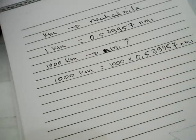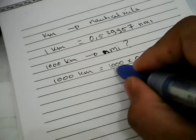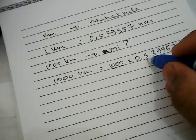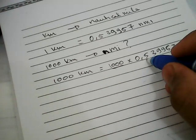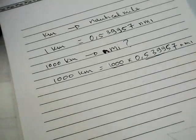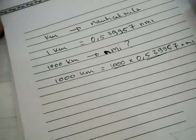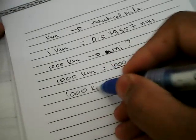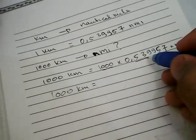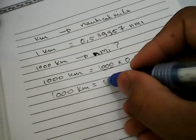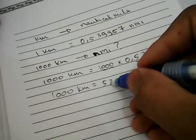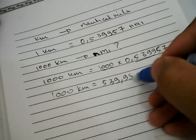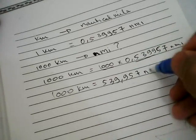We got 3, 0, and you will move this 3, 0 before the comma. So, 1,000 kilometers is equal to 539.957 nautical mile.